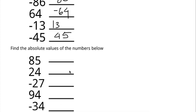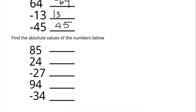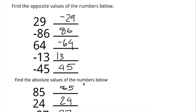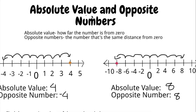Next let's find the absolute values of the numbers below. If the number is positive already you just keep it that way, and if it's negative you turn the number positive. So eighty-five is already a positive value, so you keep it eighty-five. Twenty-four is already positive. Negative twenty-seven you have to turn it positive, so this turns into positive twenty-seven. Ninety-four is already positive so keep it ninety-four. And negative thirty-four turns into positive thirty-four. And that is how you work with absolute value and opposite numbers.